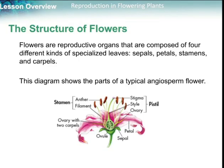Let's start with the structure of the flowers. As you know, the angiosperm flower is composed of four parts: sepals, petals, stamens, and carpels.